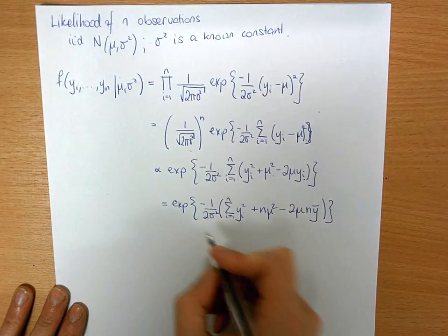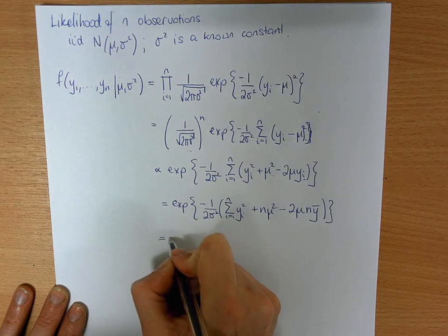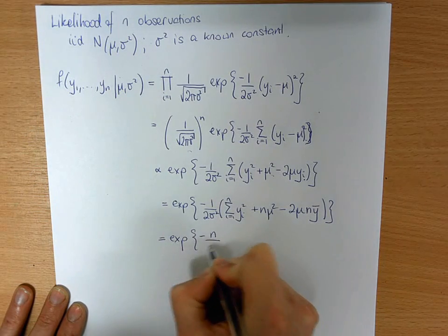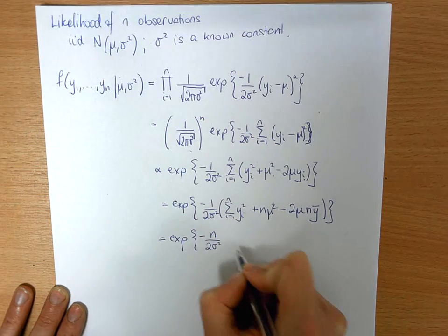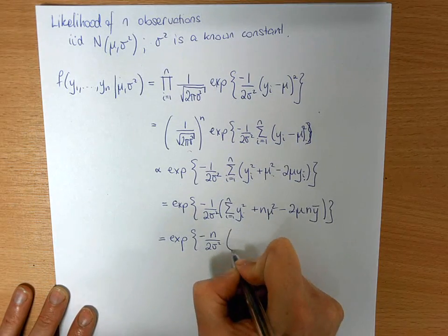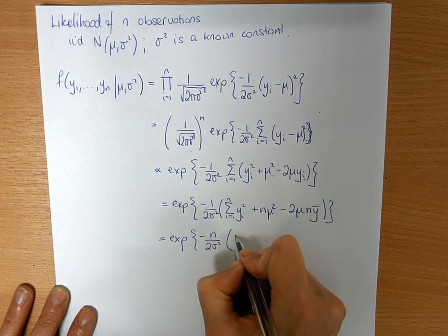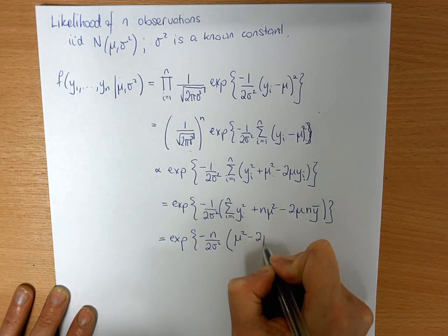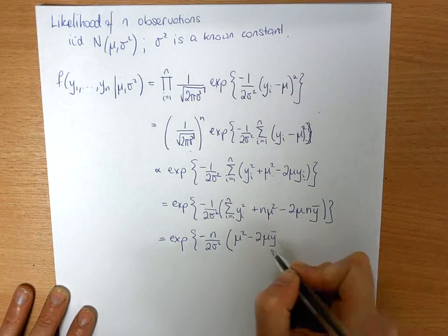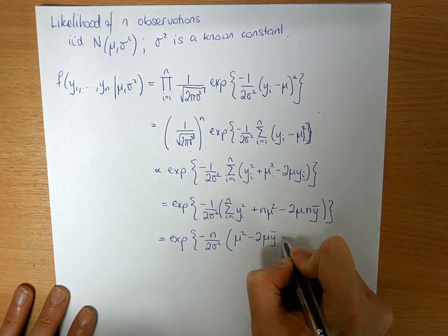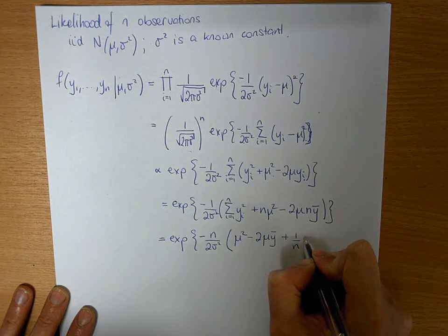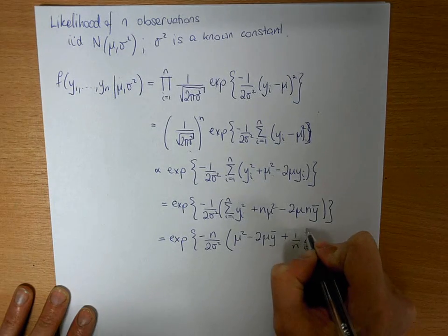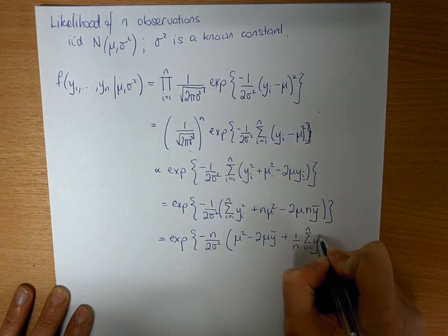If we take n outside the brackets here, we get exponential minus n over 2 sigma squared. And I'm going to slightly reorder here: we have mu squared minus 2 mu y bar plus 1 over n times the sum of i equals 1 to n yi squared.